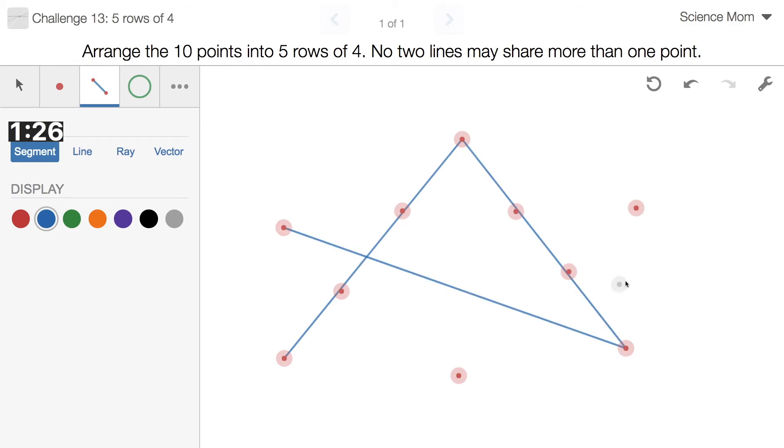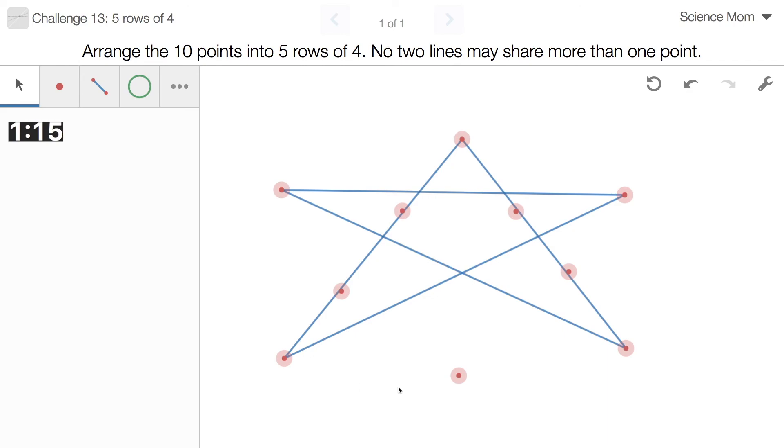Oh, so a star has, a star has five points. So there we have a five-pointed star. One, two, three, four, five lines.